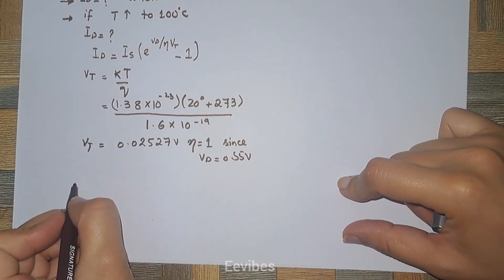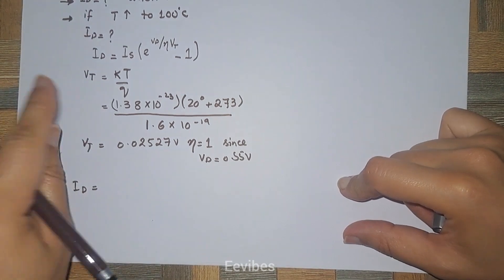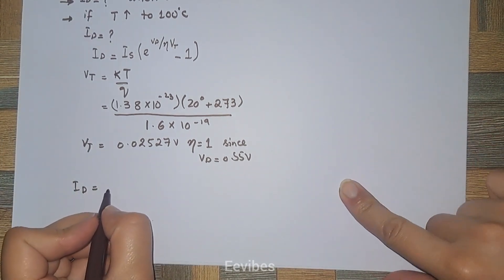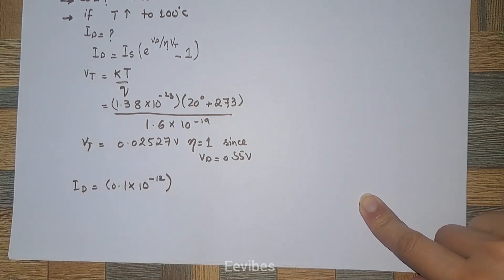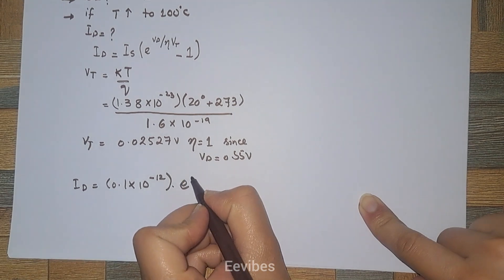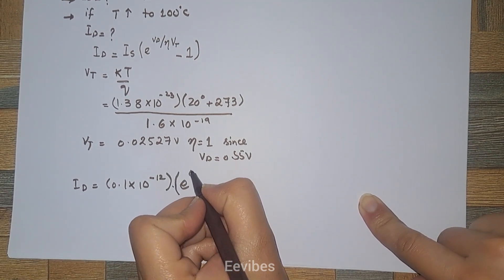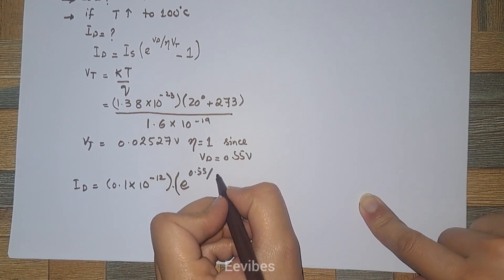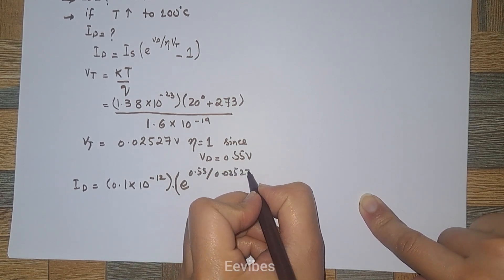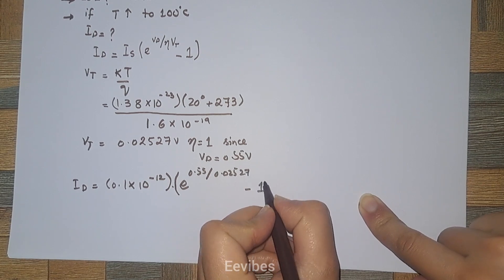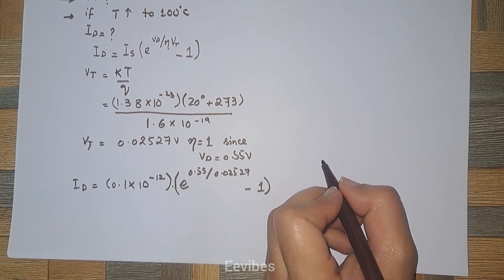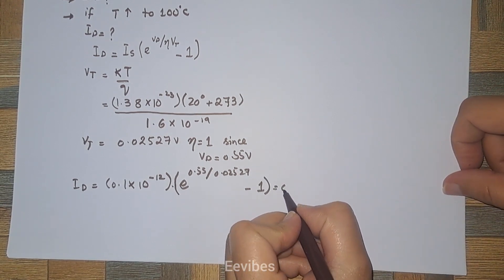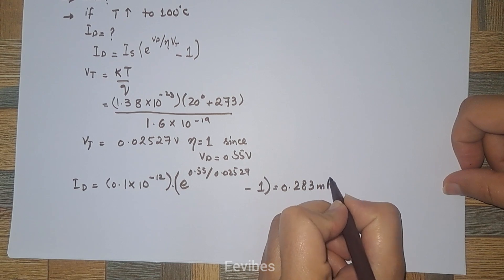IS = 0.1 × 10^(−12), multiplied by e raised to the power of 0.55 divided by 0.02527, minus 1. When you simplify this expression, you get the value of the diode current equal to 0.283 milliamperes. This value of the diode current is present at 20 degrees centigrade.